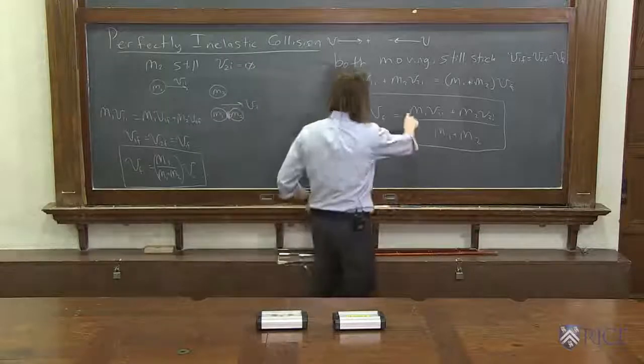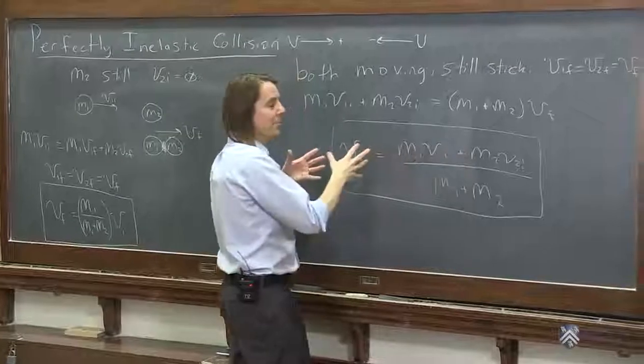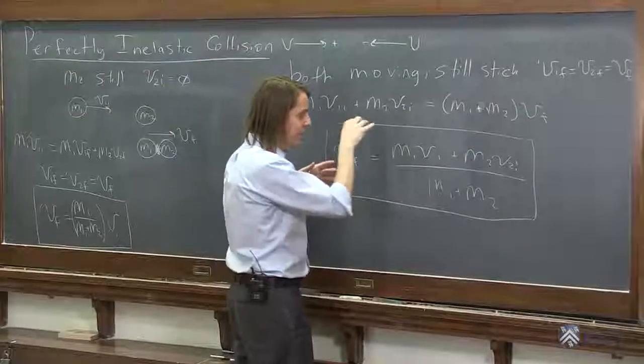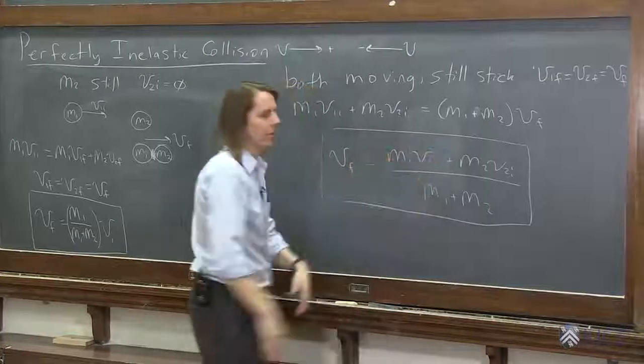So if M1 equals M2, you could factor out all of these M's, right? And it would cancel, and V1 and V2 are opposite directions with the same amount. It just gets zero. It would just stop.